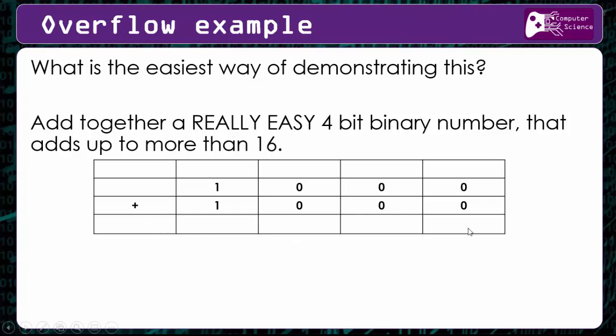So in this example we've got two 4-bit binary numbers that we're going to add together, and I know, and you should know, that this is going to result in a 5-bit binary number. As long as you pick two numbers that will result in overflow, then you'll still get the marks.